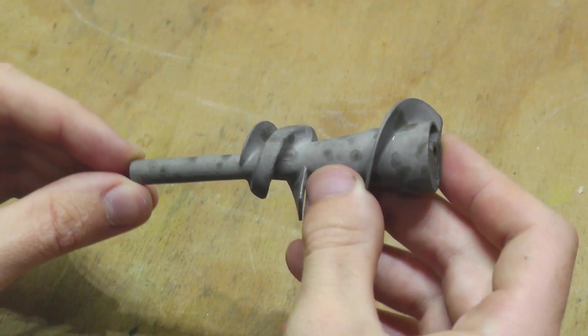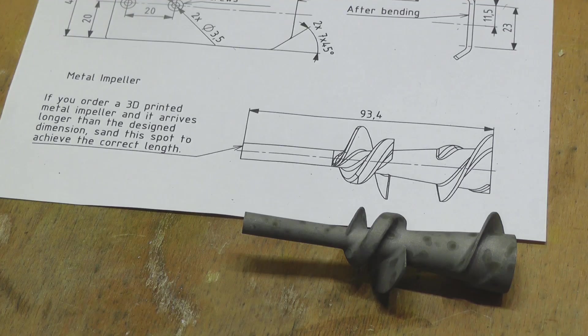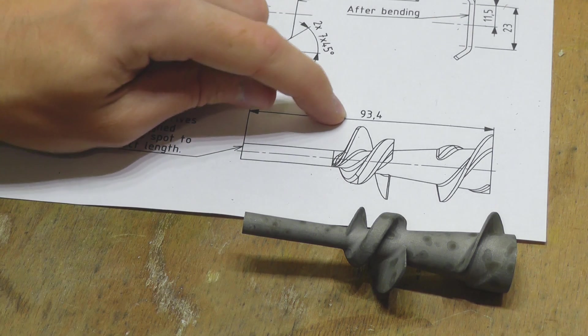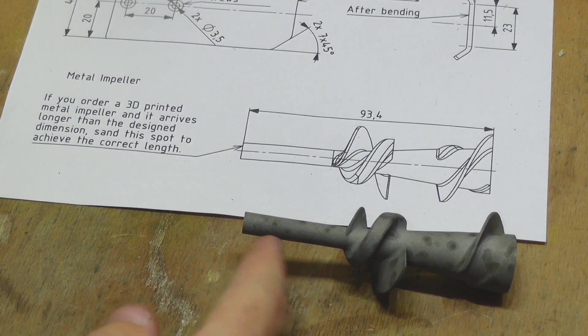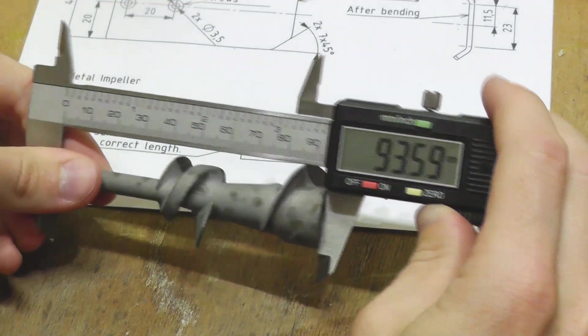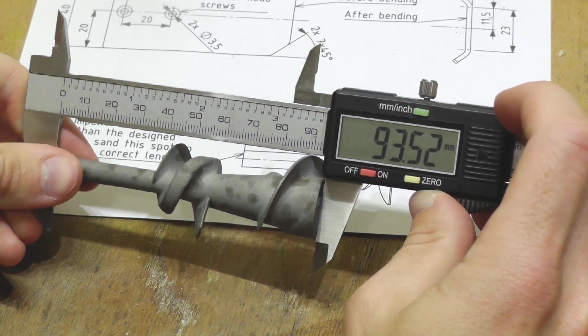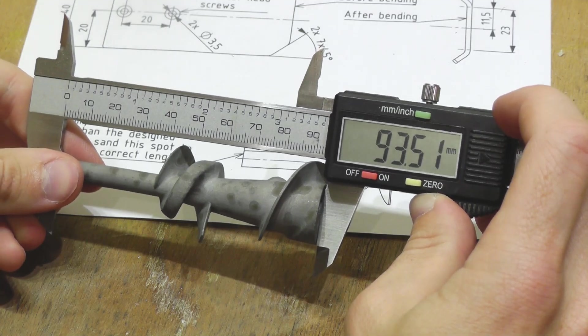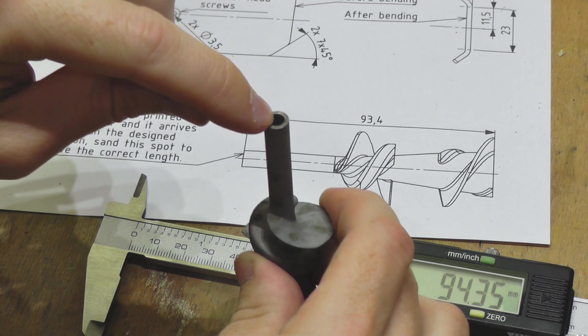Now there are two important things you need to do after you get the impeller to make sure it will work. The first thing you need to check is the overall length of it, because in some processes like metal 3D printing it can happen that the impeller expands a little bit after manufacturing. You can see that my impeller is 93.5. It should be 93.4. This is still okay. But if it was like 0.3mm bigger than it should be then you need to take a file and sand this part down a little bit.